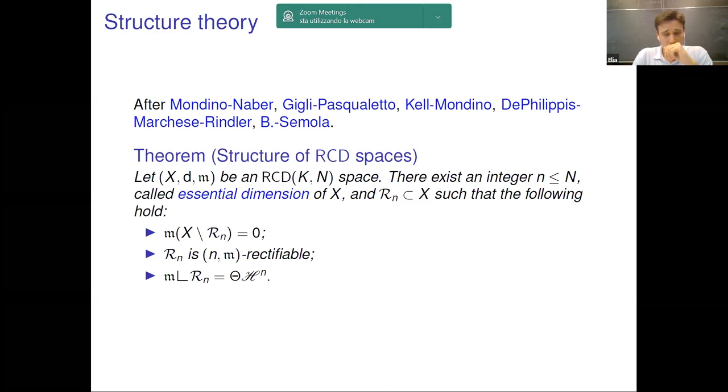This is a result obtained after the work of many authors. And the last step in this result, the so-called constancy of the dimension step, has been done by myself in collaboration with my colleague Daniele Semola. And this structural result says the following. Starting from any RCD(K, N) space, one can find an integer small n called the essential dimension, which has to be understood as the real dimension of our space. Recall that capital N is just an upper bound on the dimension. You can also find a set R_n, which is the set of regular points of dimension n, which satisfies the following properties. First of all, this set is big in the sense that it covers almost all the space. The complement of this set is negligible with respect to the ambient measure m.